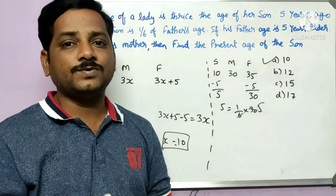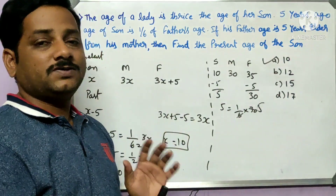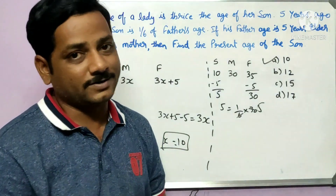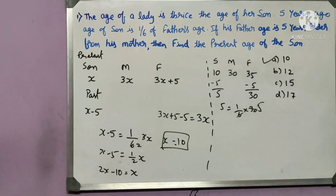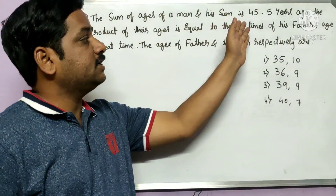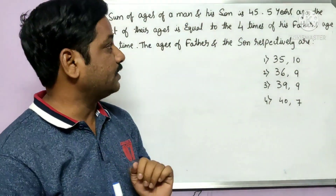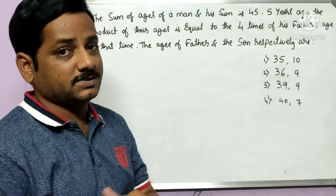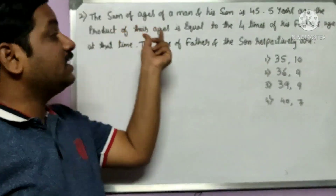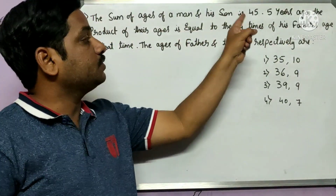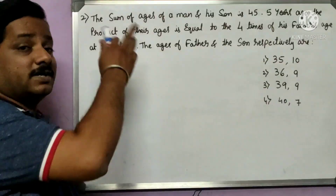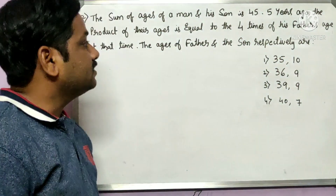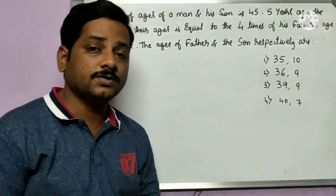Now let's take a second question and solve it using only the shortcut method. The sum of ages of a man and his son is 45. Five years ago, the product of their ages is equal to four times the father's age at that time. Find the ages of the father and son respectively.